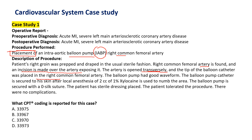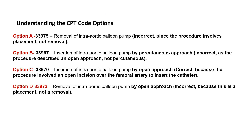There are four options. Let's analyze all the options and conclude our final answer. By seeing the option code descriptions, you can easily eliminate option A and option D — both are incorrect because those two options are procedures all about removal. The procedure is all about placement. So now you have to decide between option B and option C.